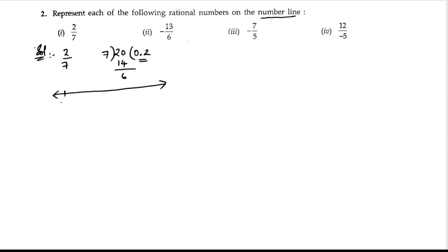Here it will be 0.1, 0.2, 0.3, 0.4, 0.5, 0.6, 0.7, 0.8, 0.9, 1. So here we will get, we can write 2 by 7.